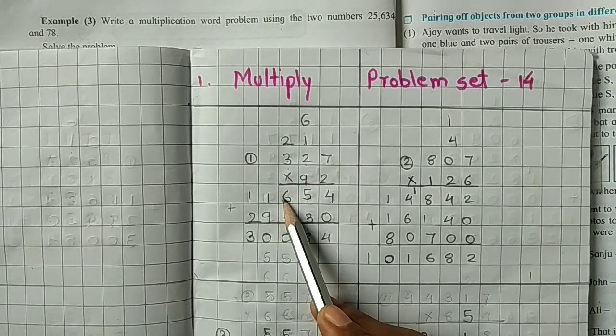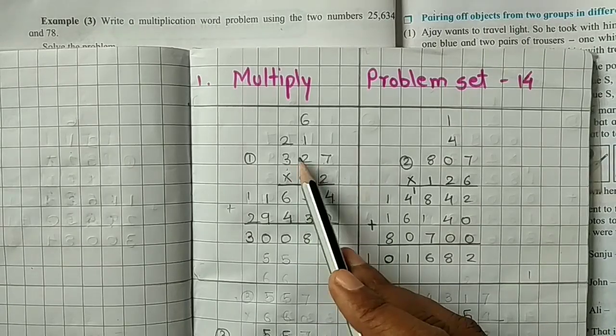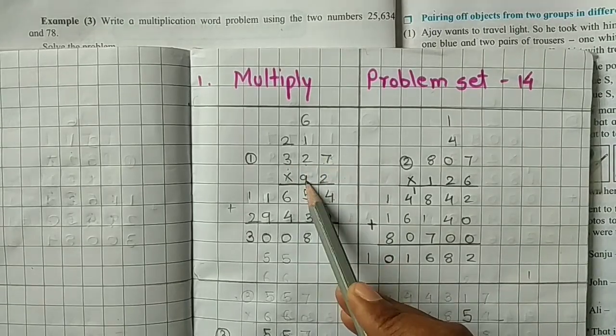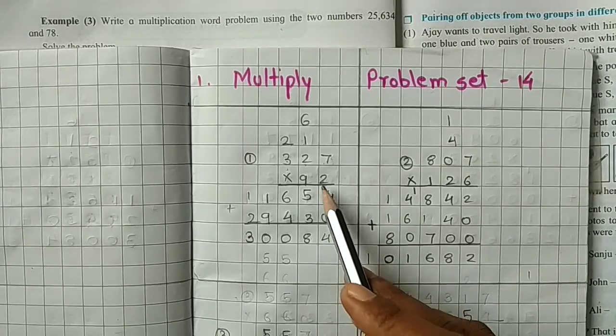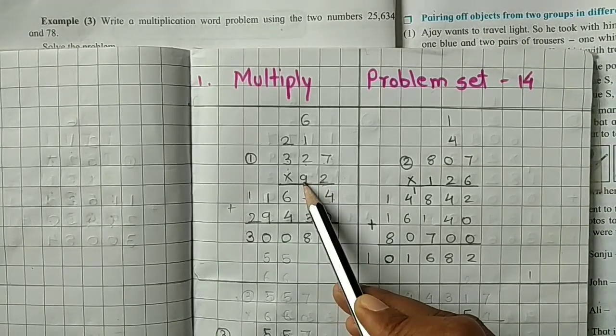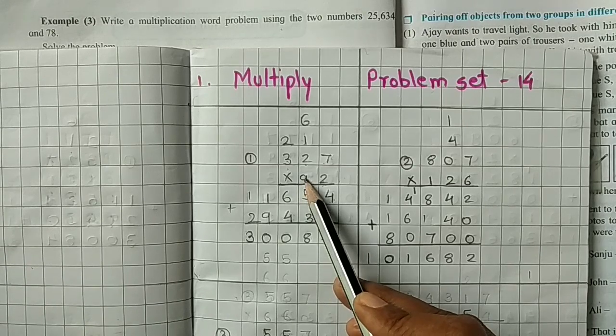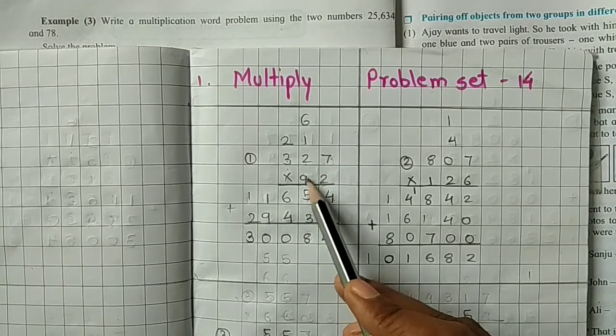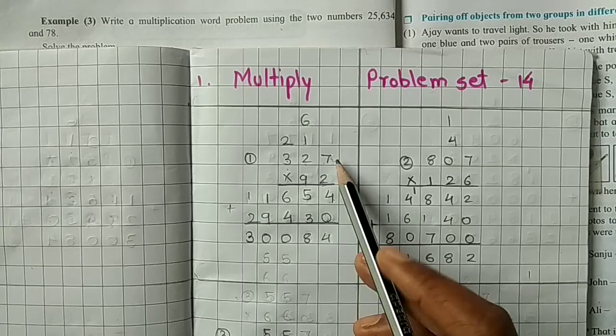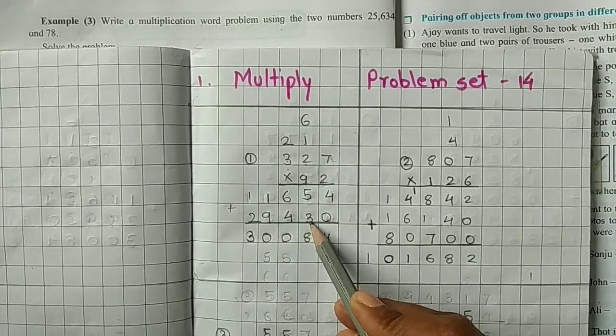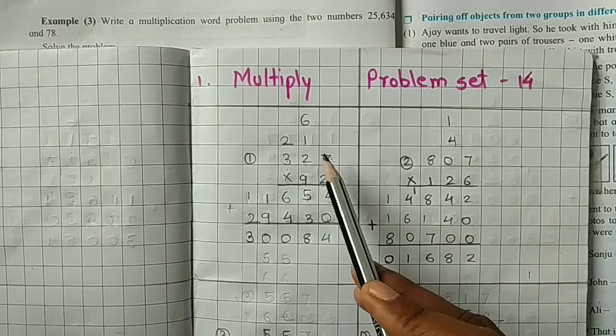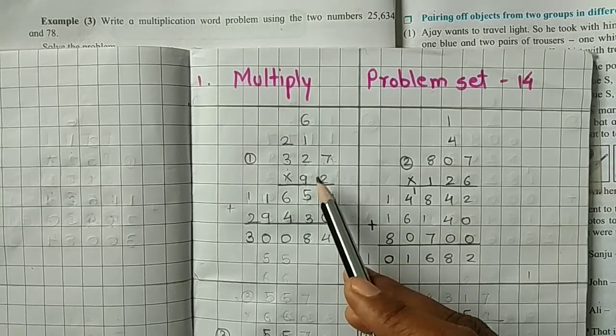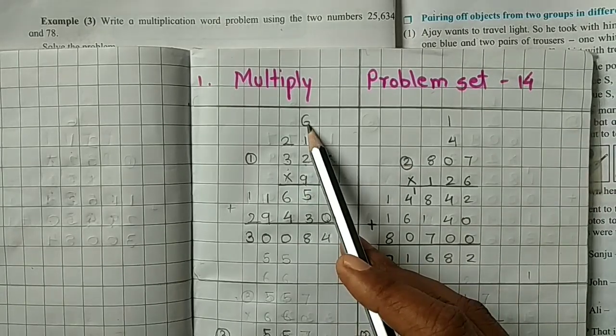Now afterwards we multiply 327 by 9. Remove 1 place because our unit place multiplication is over. Now multiply 9 with 7. 9 times 7 is 63, so write 3 here, 6 carried over. Next 9 times 2 is 18 plus 6.